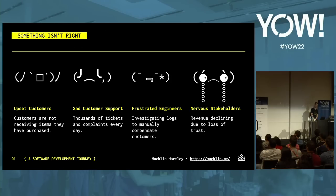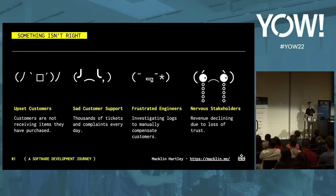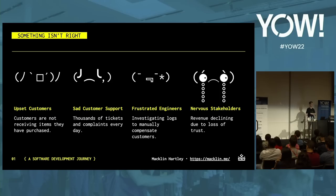But hold on a minute — something isn't quite right. Our customers are unhappy. After doing some digging, we find that a lot of customers are reporting that their balance gets deducted but they don't receive the avatar. Customer support is receiving thousands of complaints every day. Engineers are wasting time helping customer support manually compensate those customers. And worst of all, fed-up customers are just leaving, and revenue is dropping.